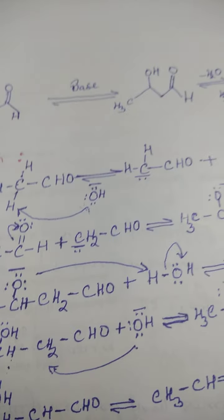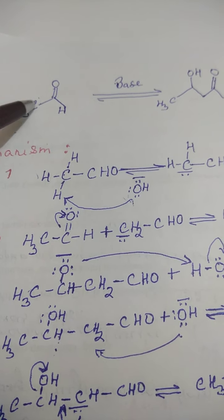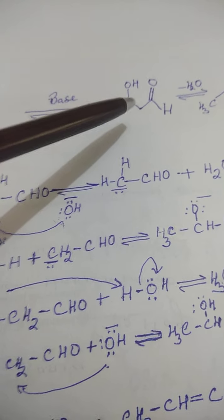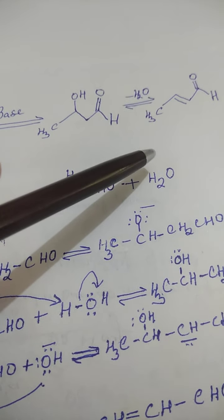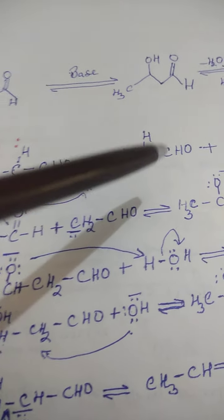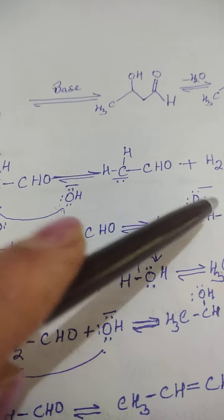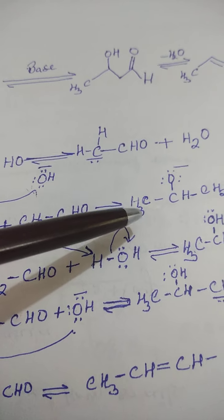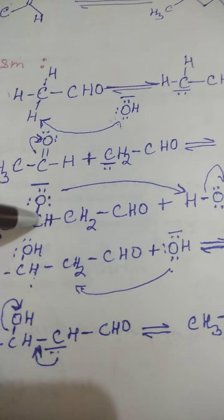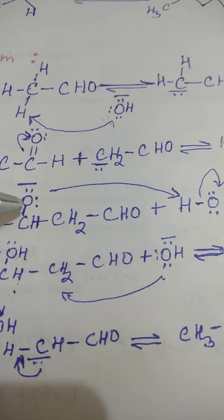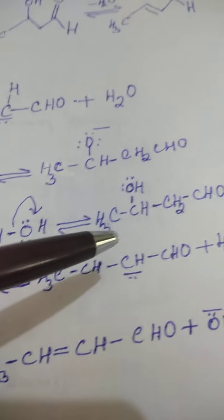Now let's see the mechanism of this reaction. Acetaldehyde in the presence of a base will give us an aldol, which by eliminating water when heated will lead to an unsaturated carbonyl compound. In the first step, the base attacks the alpha carbon to give a carbanion. This carbanion then attacks the carbonyl carbon to give a condensed product, which reacts with water since the oxygen is negative, yielding the aldol.